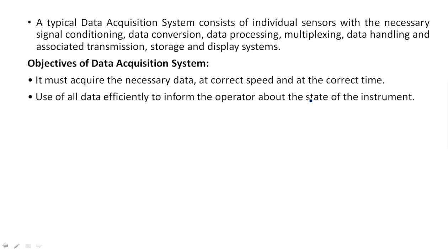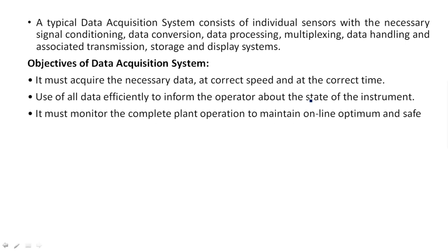All data must be used efficiently to inform the operator about the state of the instrument. When an instrument is running, the data acquisition system collects all the different types of data and multiplexes them together, producing an output waveform. If any errors or non-working conditions are observed in that output waveform, they have to be remodeled. Such data efficiency should be there to inform the operator about the state of the instrument.